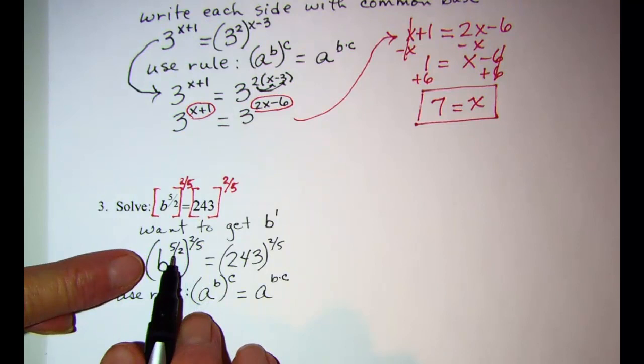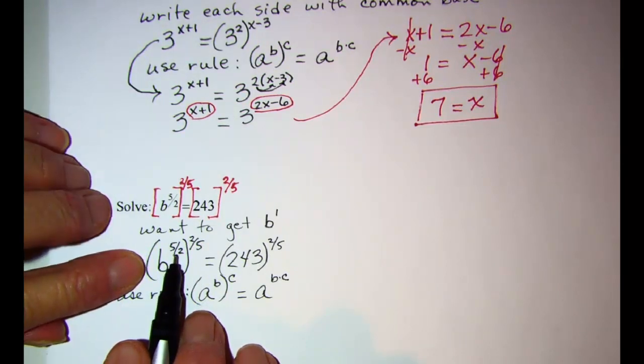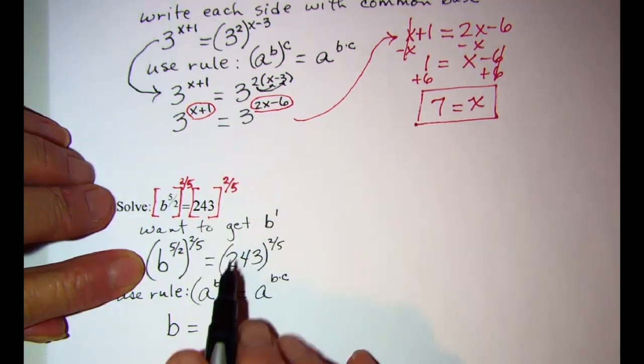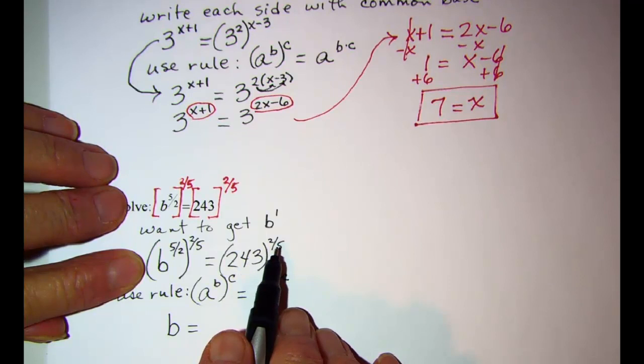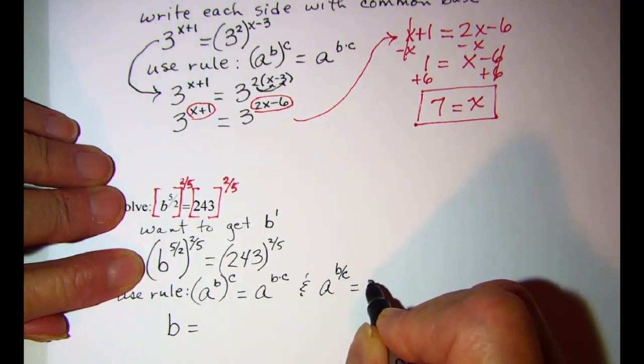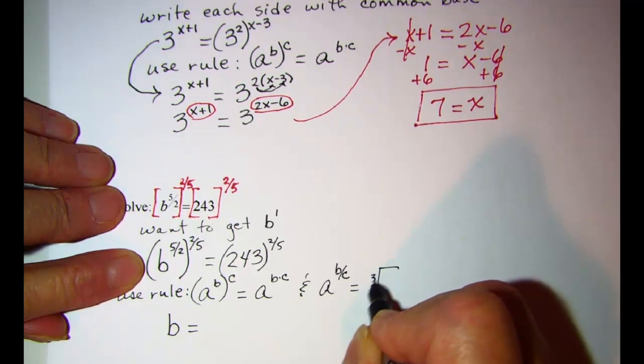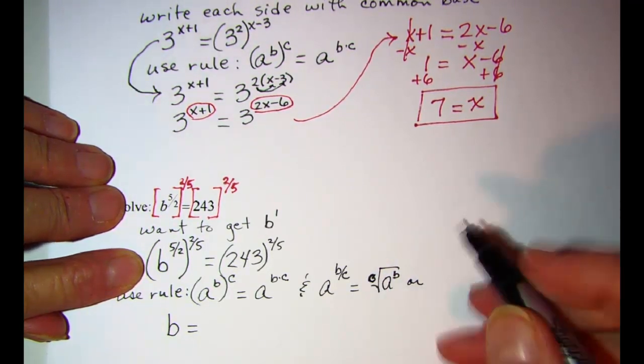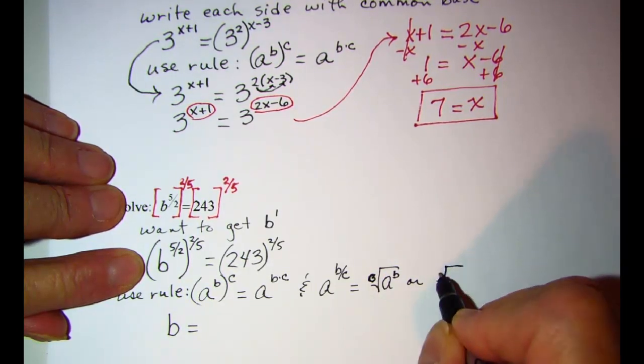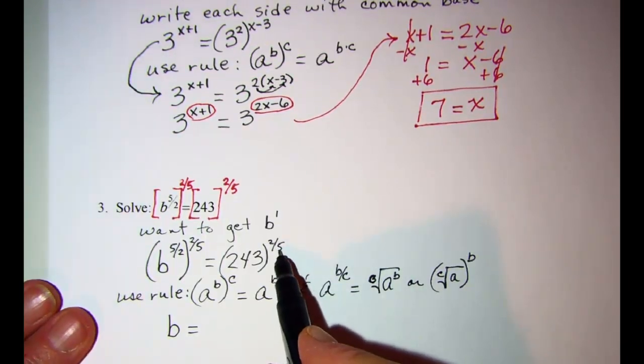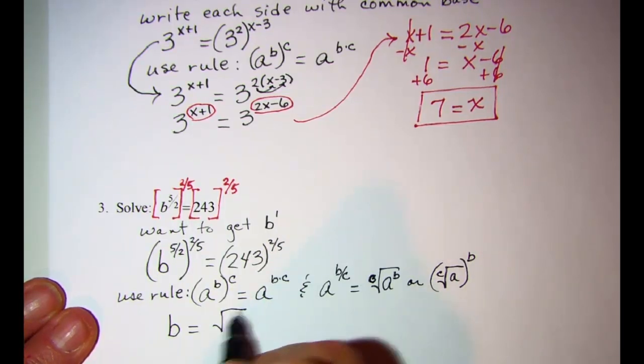Multiplying these two fractions, reciprocals multiplied together equals 1. So this is just b on the left side. On the right side we know that a^(b/c) is the same as the c-th root of a^b. So this is the fifth root of 243 squared.